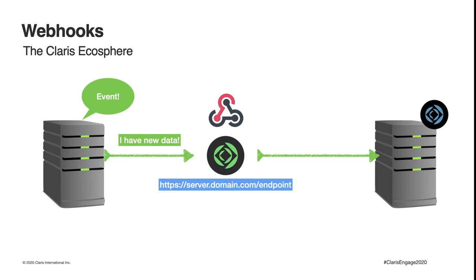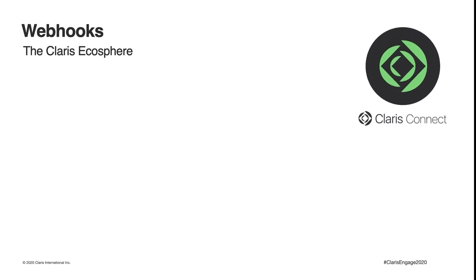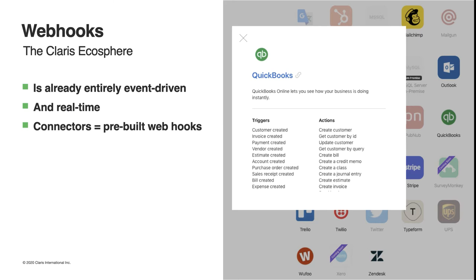In the Claris ecosystem, that thing in the middle is Claris Connect — that is what it's there for. Everything Claris Connect does is based on something that happens in another system, and it does everything in real time. The connectors Claris Connect makes available work by automatically generating a URL and registering it with the other system, so that when a trigger event happens, the other system sends data to Claris Connect. You can think of all of these connectors as nothing more than pre-built webhooks.